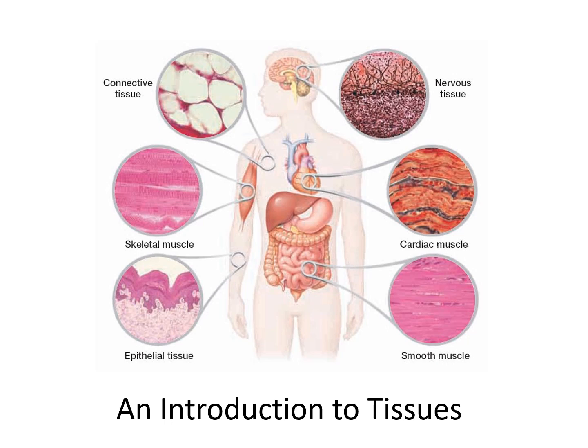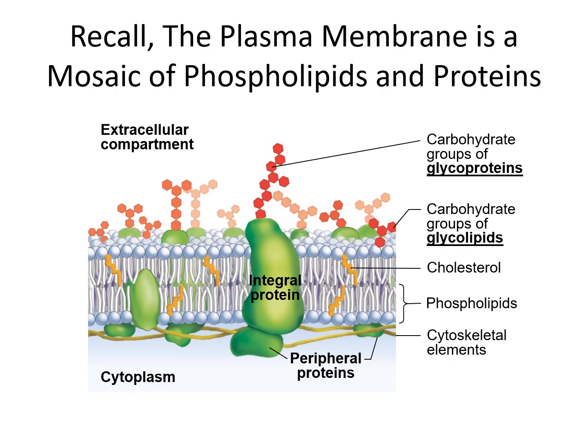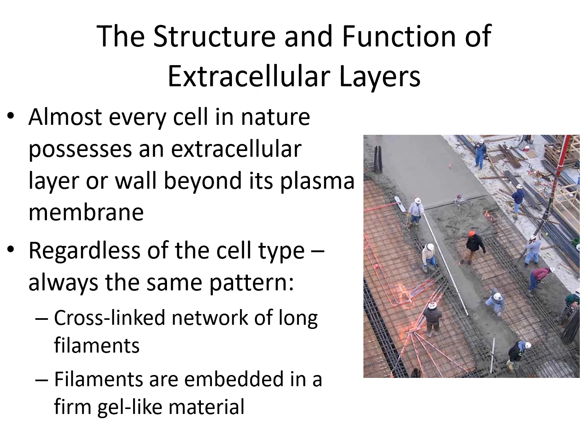We've talked about atoms, monomers, polymers, macromolecules, organelles, and cells. We're going to continue up this biological hierarchy and look at tissues — collections of cells that work together as a unit to perform a certain function. The plasma membrane is a mixture of phospholipids and proteins; many of those proteins and some lipids have carbohydrates attached — glycoproteins and glycolipids — that identify the cell as being part of you and of a particular tissue type. Unlike plant, fungal, and bacterial cells, animal cells do not have a rigid cell wall.